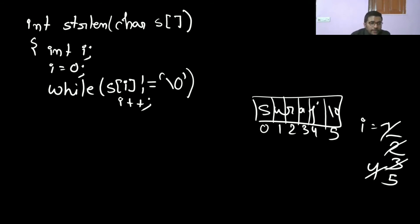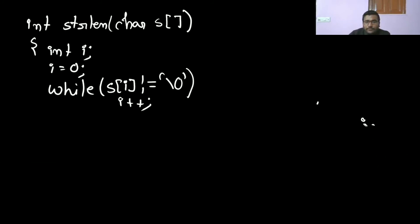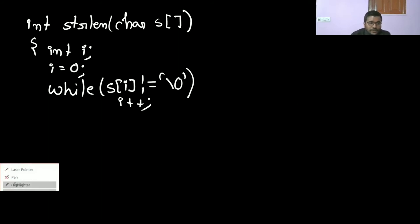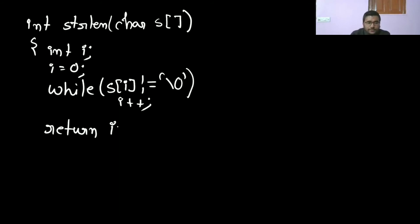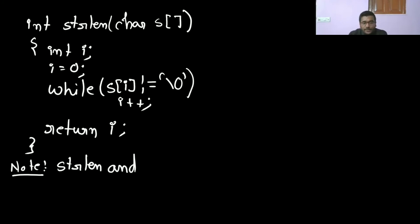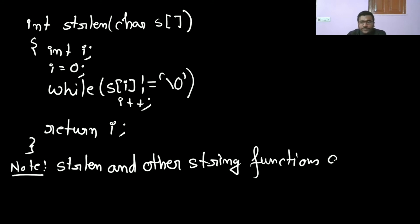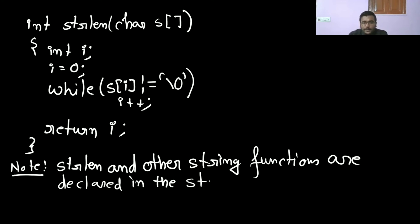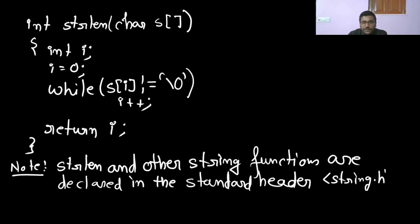When s[i] equals null, it will not go inside the loop, so it returns 5. The function returns 5 for "suraj". Note that strlen and other string functions are declared in the standard header file string.h.